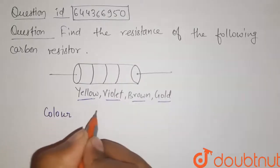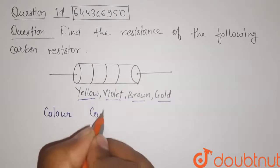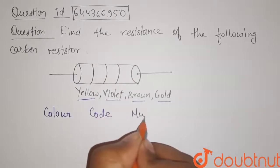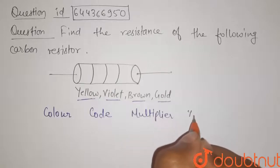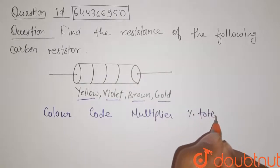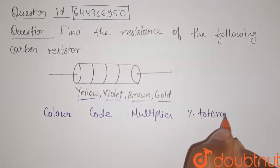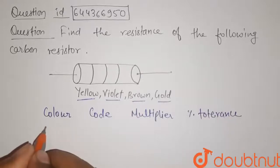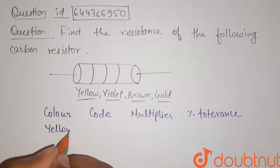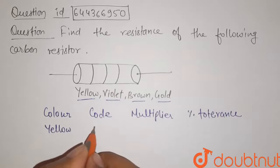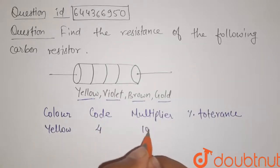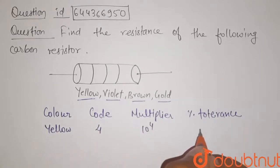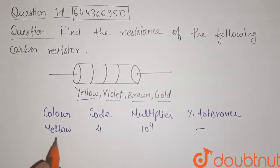The table has four columns: color, code, multiplier, and percent tolerance. The first color is yellow. The code for yellow is 4, the multiplier is 10 to the power 4, and percent tolerance is not specified.